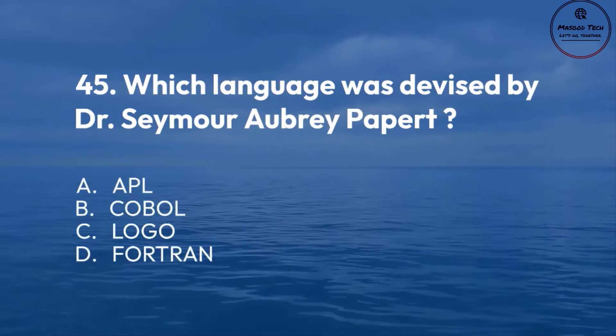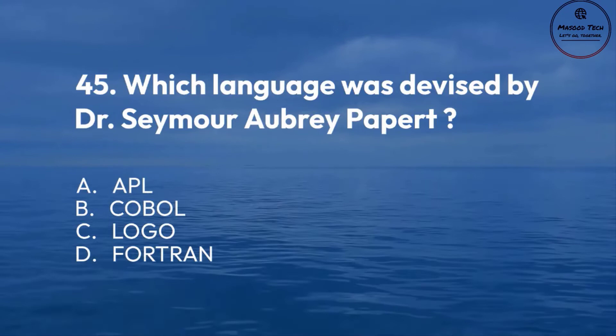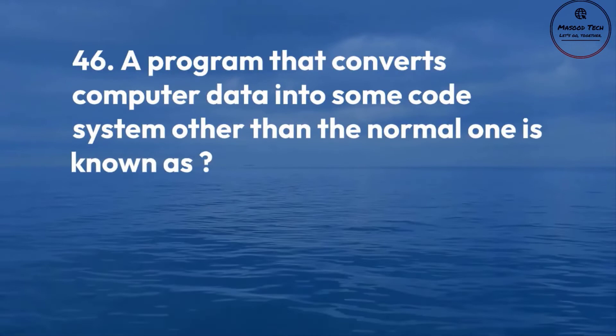Number 46. A program that converts computer data into some code system other than the normal one is known as: A. Encoder. B. Simulation. C. Emulator. D. Coding. Correct answer is A.